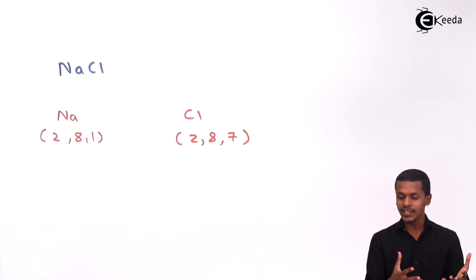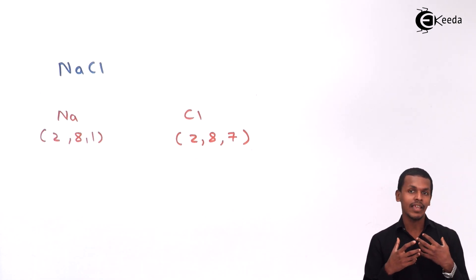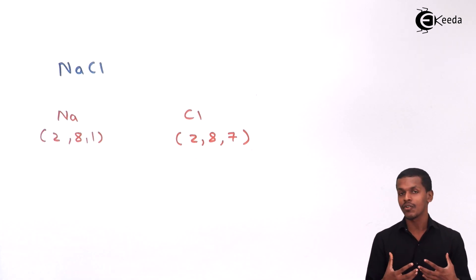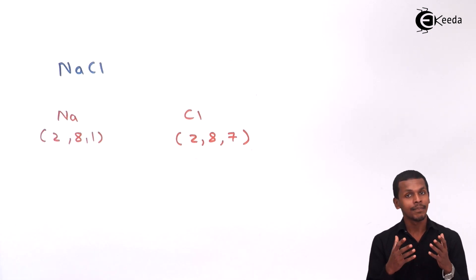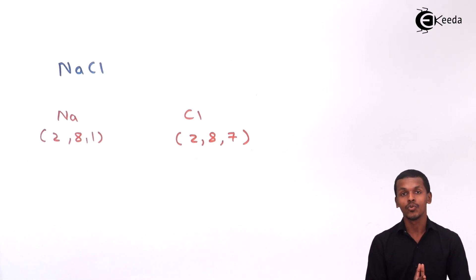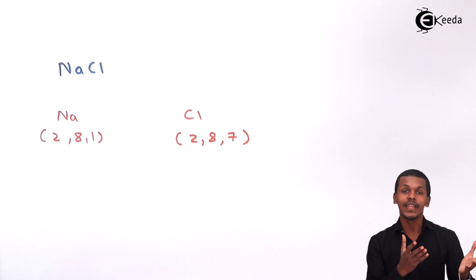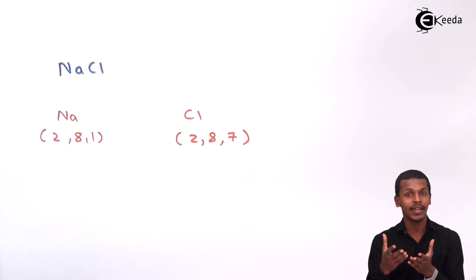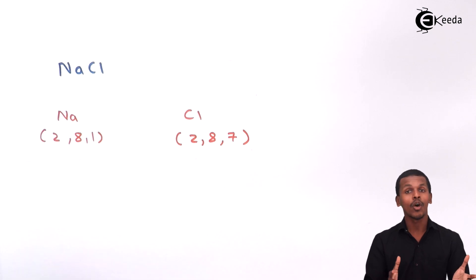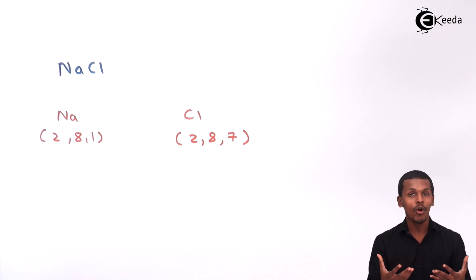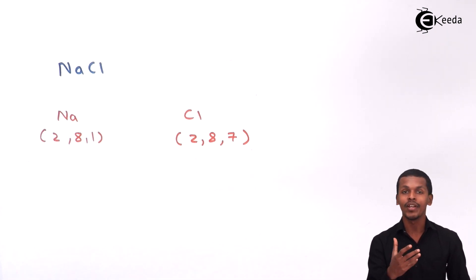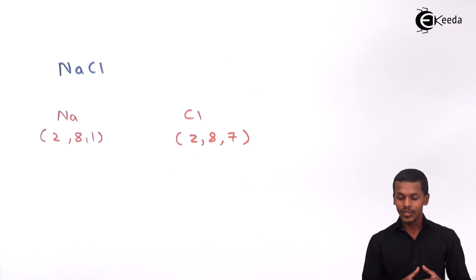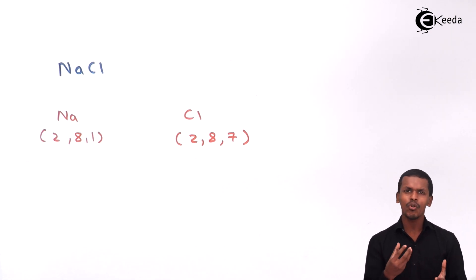So two atoms either give electrons, take electrons, or share electrons — but they have to behave like a noble gas or achieve a stable electronic configuration like that of the noble gas. That is how the bond is formed between two atoms, or we could say a bond is formed in a molecule. That is the octet rule, but now let us also talk about its limitations.